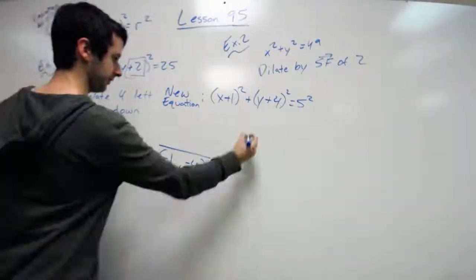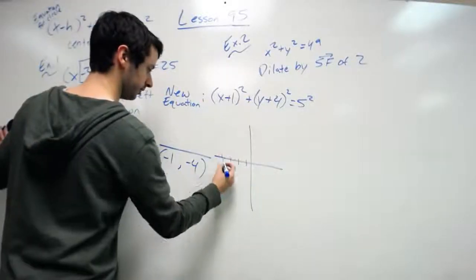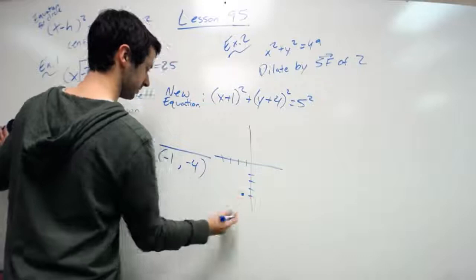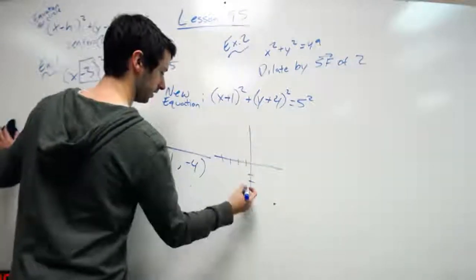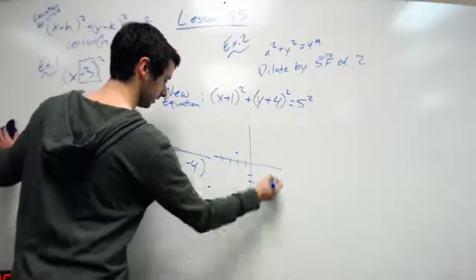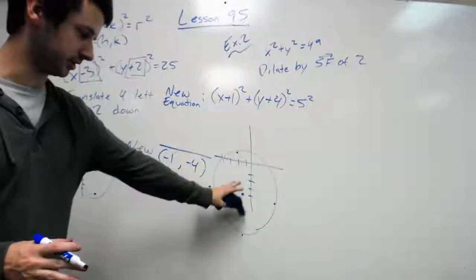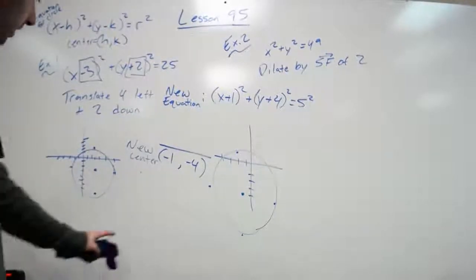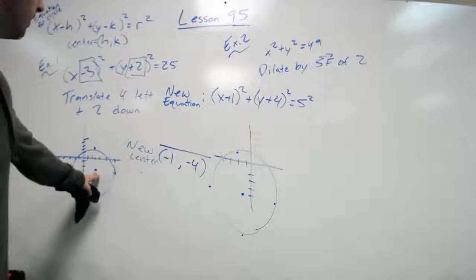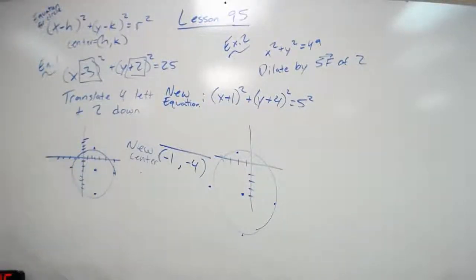So when I draw that, negative one, negative four, there's my center, and I go roughly five units. I know obviously my drawings are very human, so they're different size, but all that happened was I moved this center left four and down twice.